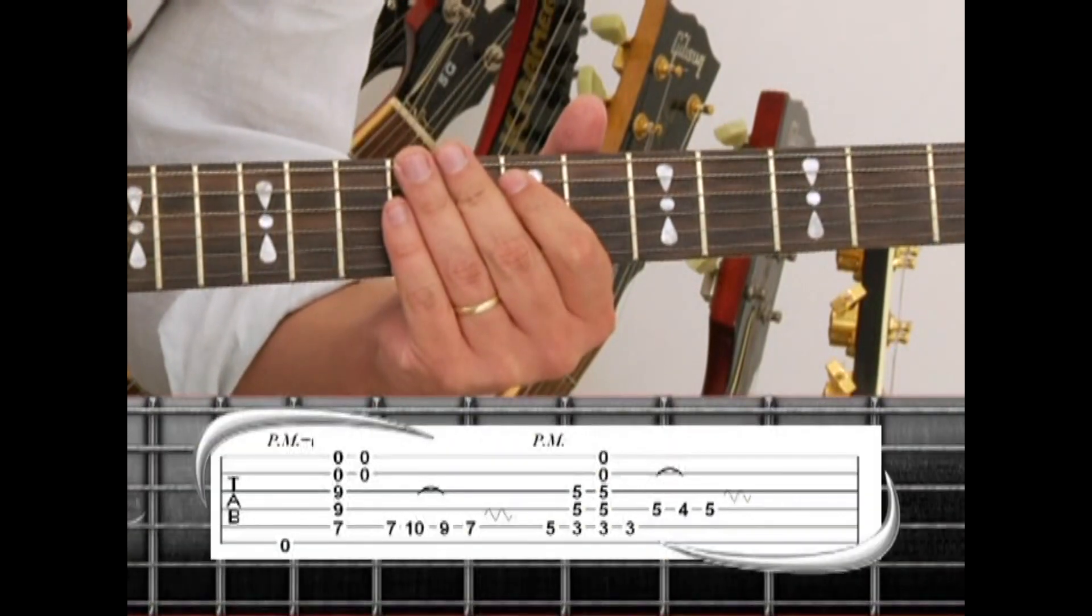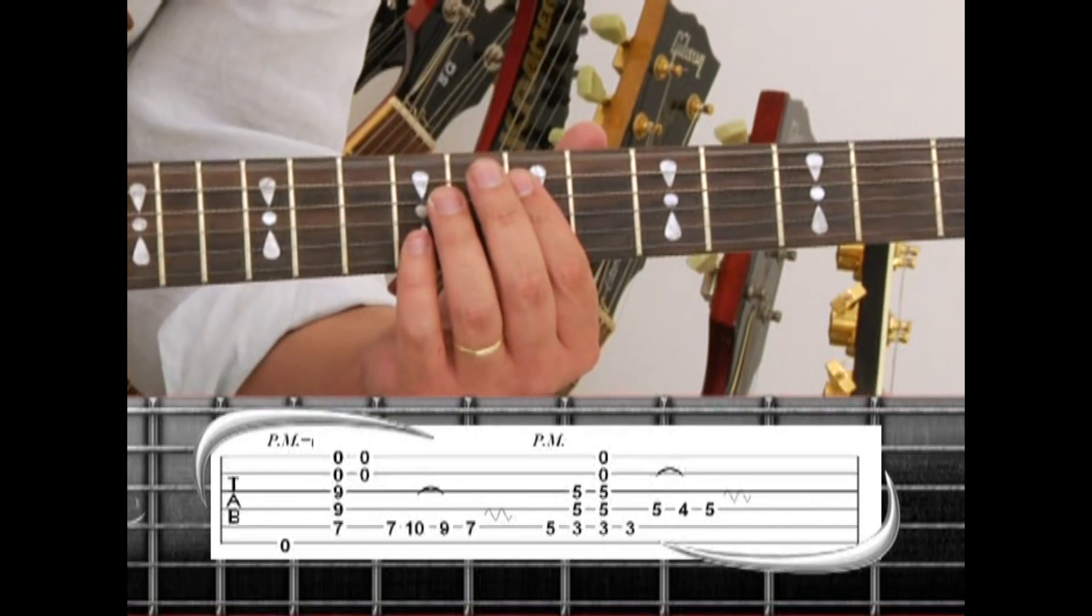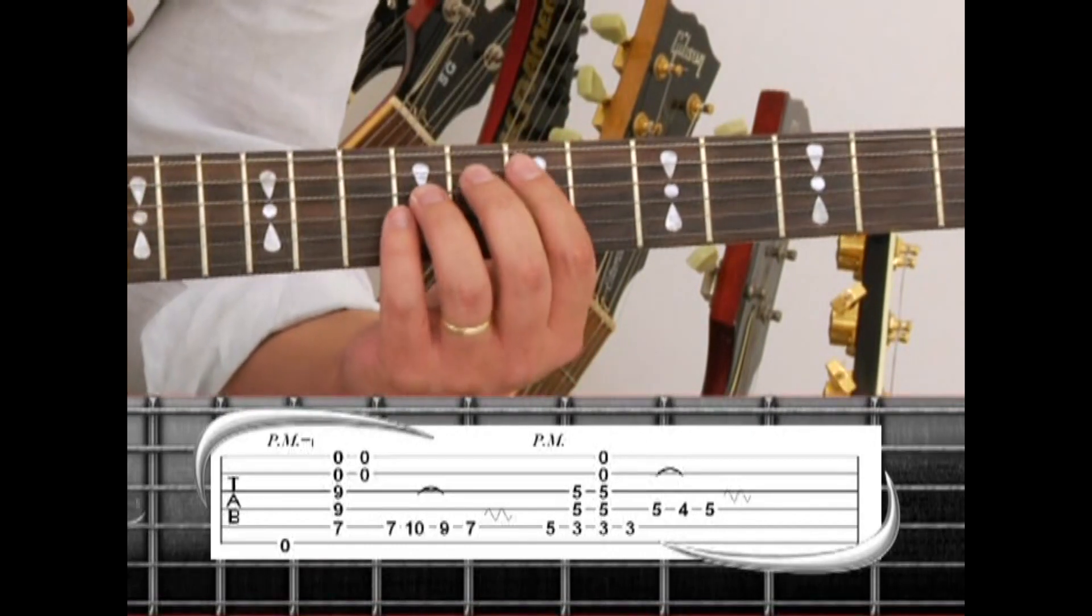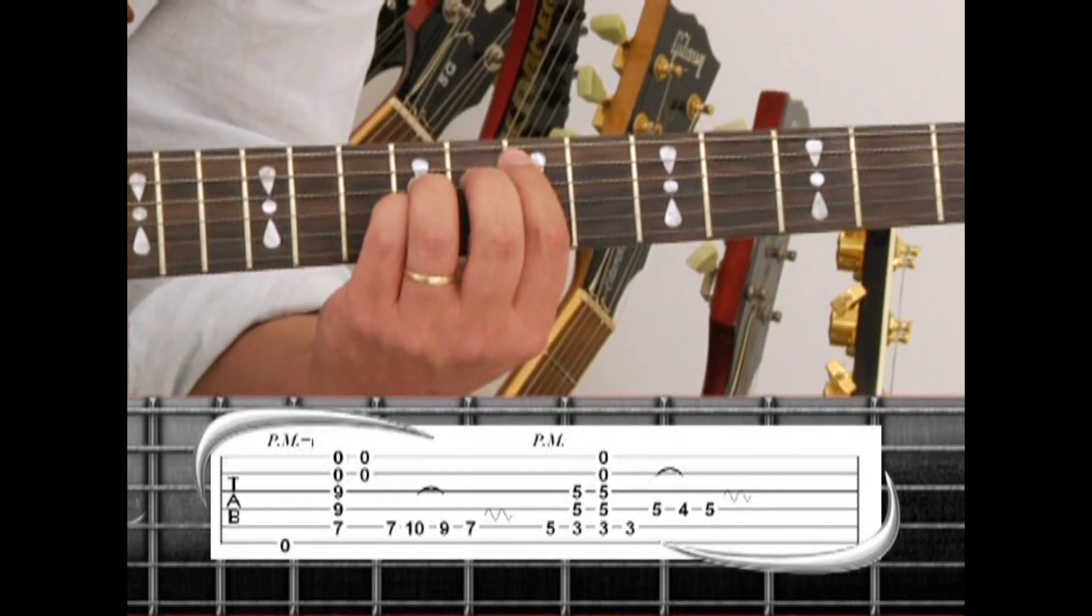Phrase 5 comes in with a single open 6th string, palm muted. Lead in note. Then the E5 drone. Then strings 1 and 2 by themselves.